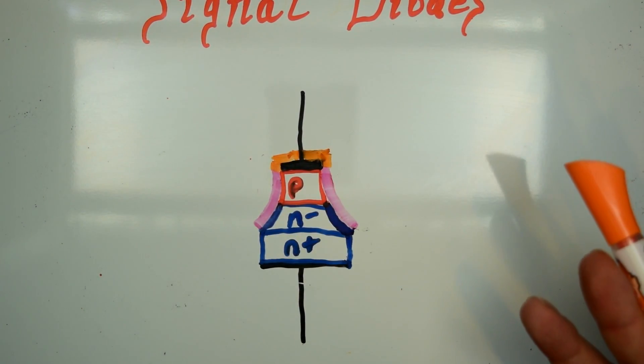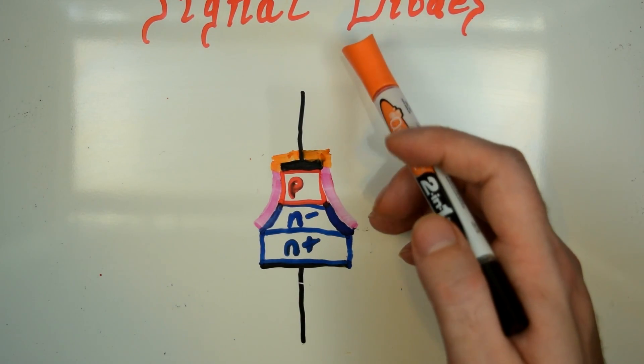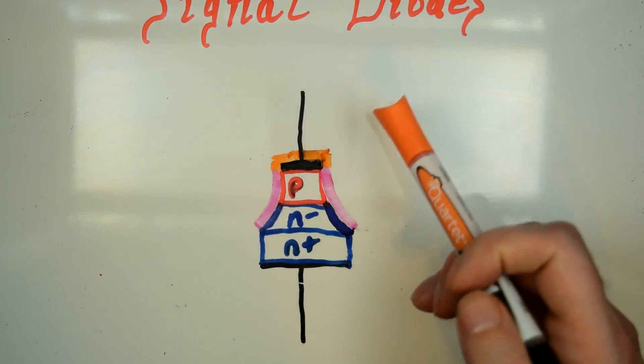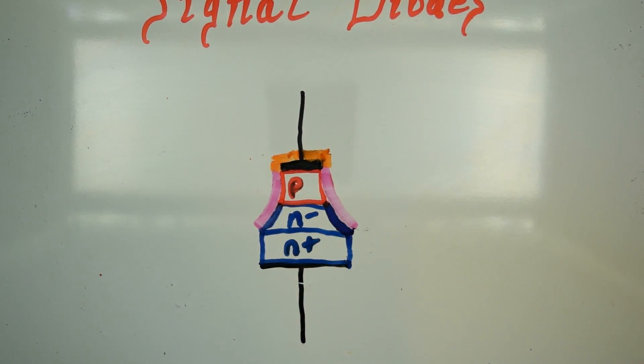But that's pretty much all there is about signal diodes: high frequency, quick recovery time, low voltage, low current applications for signal diodes. That's about all I have to say for the basics on signal diodes. If you have any questions, feel free to ask in the comments below.